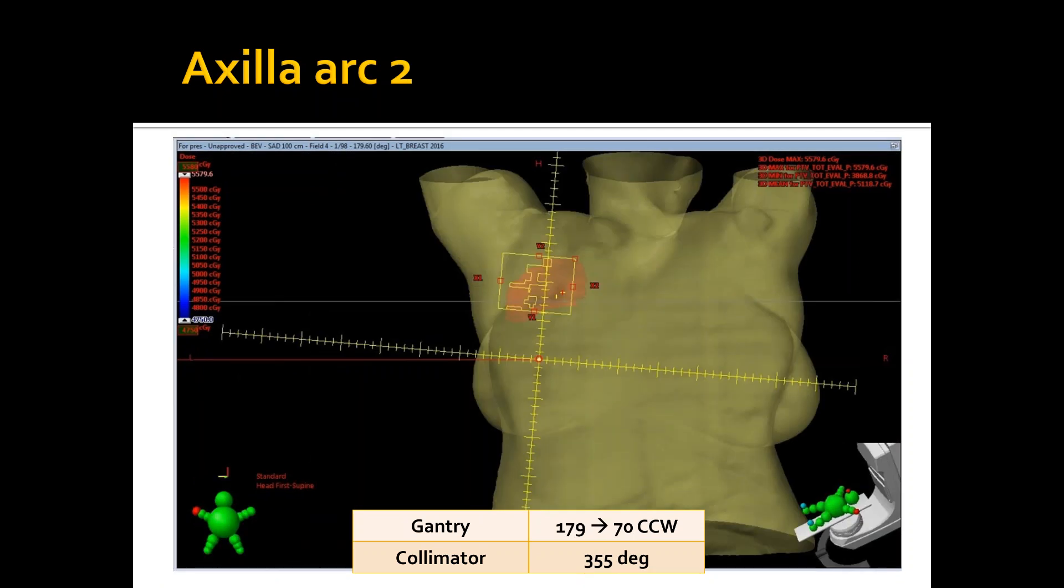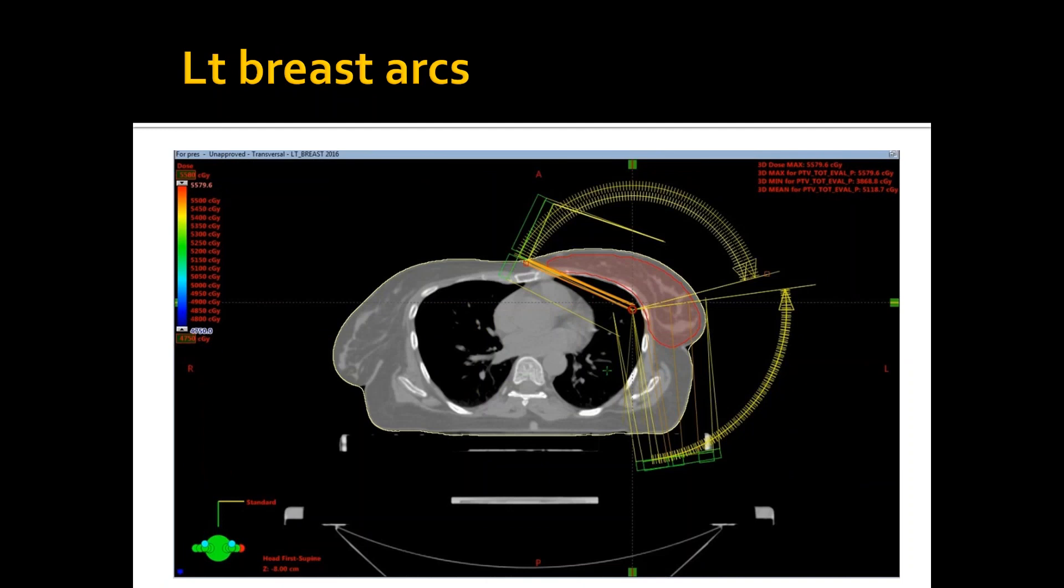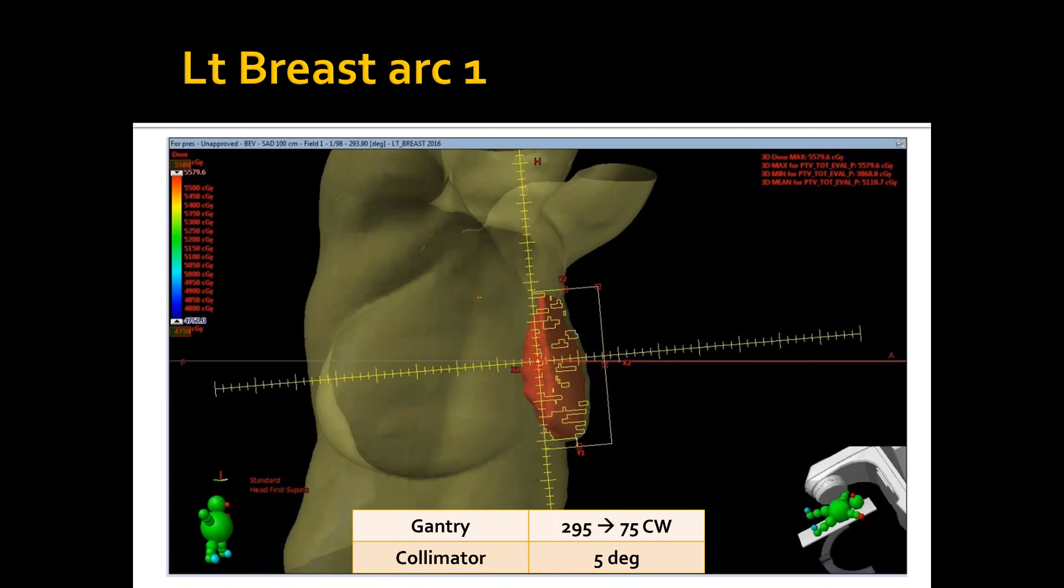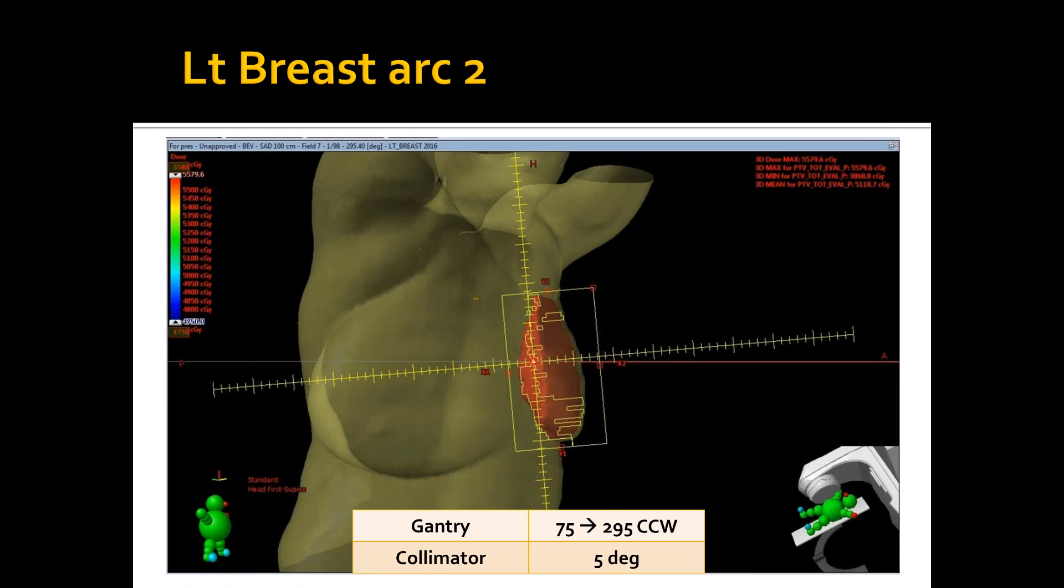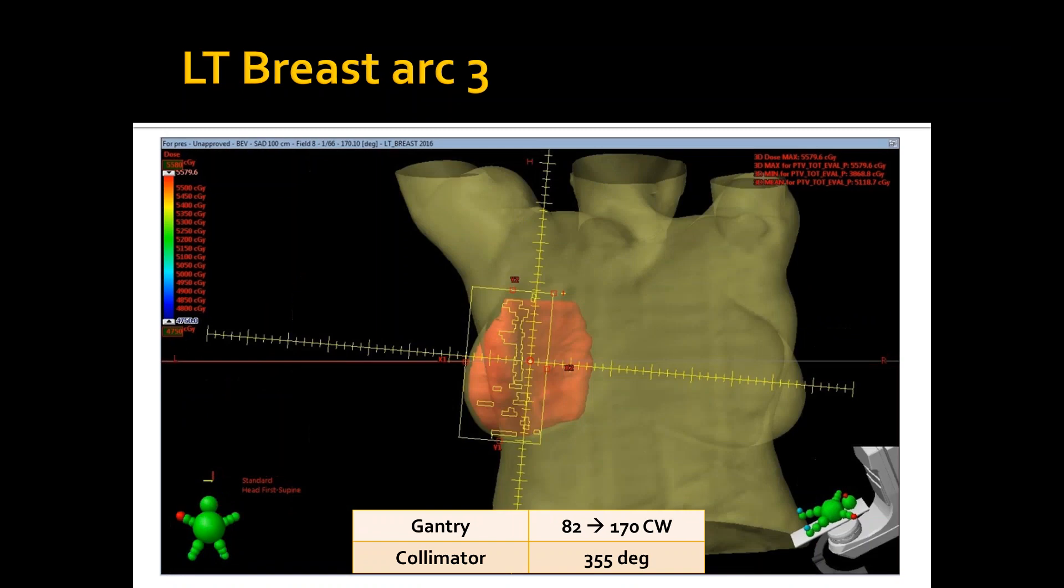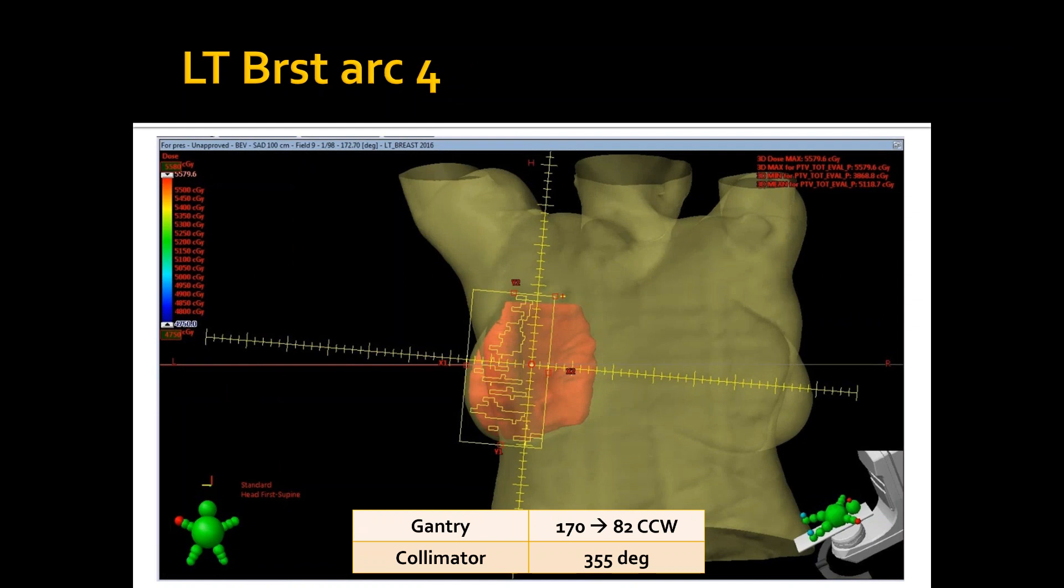And for the left breast, I used actually four partial arcs this time. And this is just to give the optimizer more flexibility because the left breast is the largest target in our case. And I just gave it four arcs to be more flexible. This is the first one with the half beam block from 295 to 75 clockwise. The second one is the same, but I opened the X jaws a little bit more just to give the system more flexibility to find more solutions. And this is the third and fourth arcs. They're identical arcs with different rotation directions.